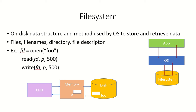A file system is an on-disk data structure and a method which is used by the operating system to store and retrieve data. If there is any application which wants to access the files or the data stored on some secondary storage, it sends a request to the operating system, and the operating system uses the file system to access the data on that disk.